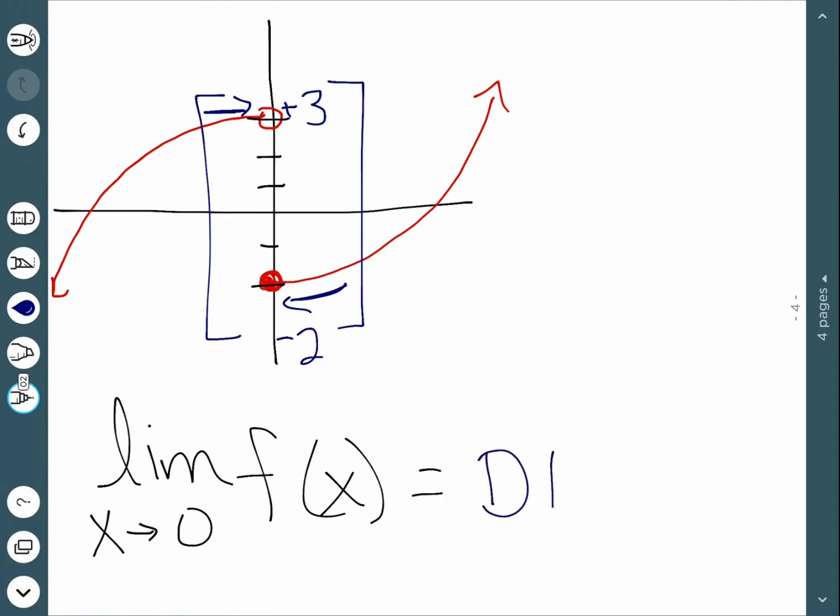And in this case, whenever we can't say that it goes to a single number, we say the limit does not exist. DNE for does not exist.